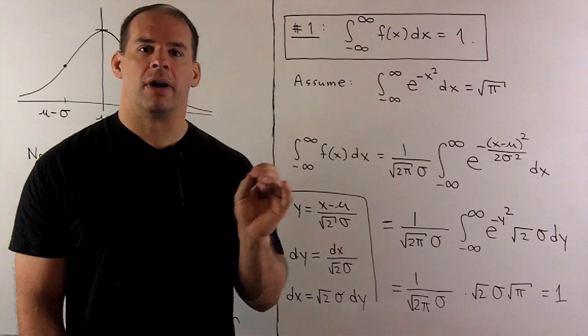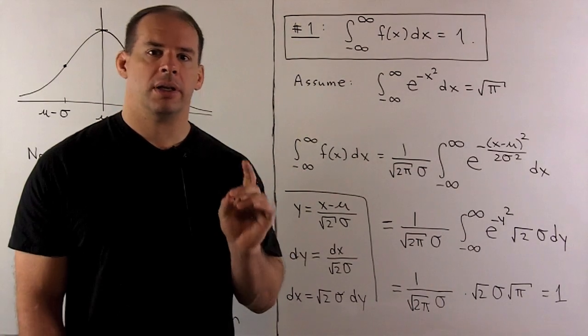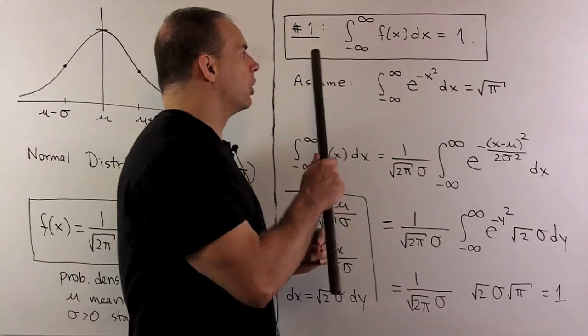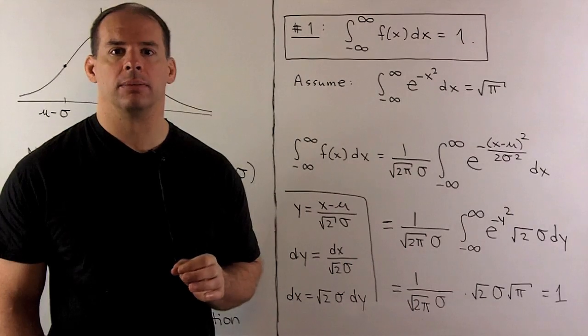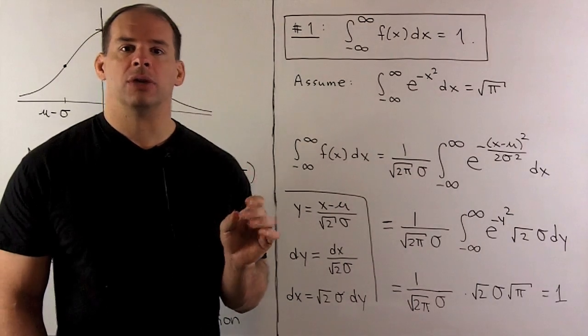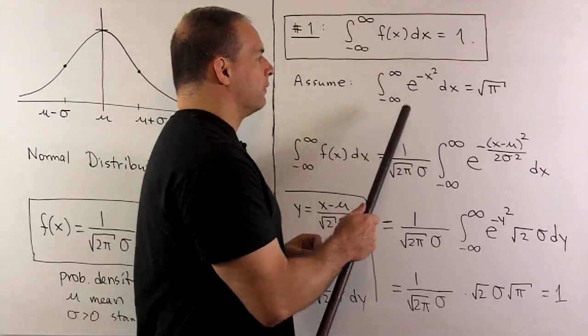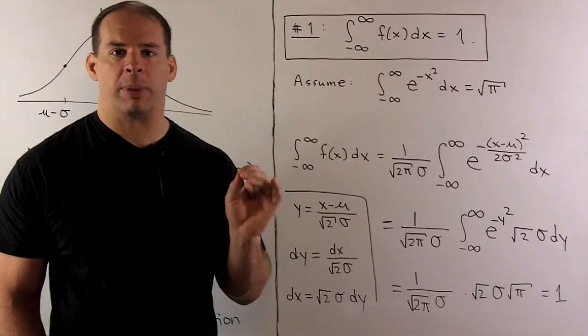First, we verify that f(x) is a probability density function. Since we have the graph of f(x), we know that it's positive everywhere. So we need to only show that the integral of f(x) over the real line is equal to 1. Now, to show this, we need to make the assumption that the integral of e to the minus x² over the real line is equal to square root of π.